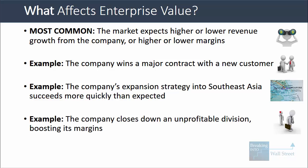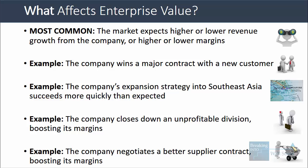On the margin side, maybe the company decides to close down an unprofitable division and as a result the margin for the company as a whole increases, and in the future its margins are also expected to be higher. Or maybe the company negotiates a better contract with its key supplier — it pays less for its inventory, its cost of goods sold will be lower, its gross profit will be higher, and its operating margin will also be higher, which would also increase the company's enterprise value.